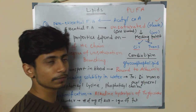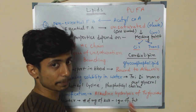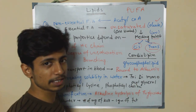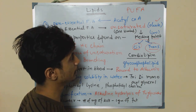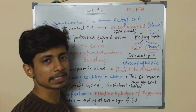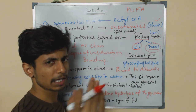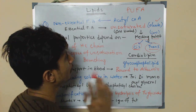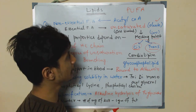The melting point can also be determined by the cis or trans nature of the fatty acid. Unsaturated fatty acids can be both cis and trans. The trans type has a higher melting point, while the cis type has a lower melting point.